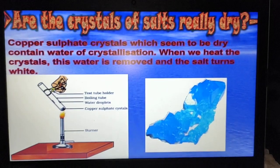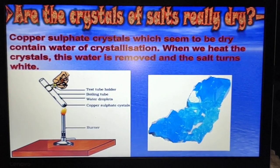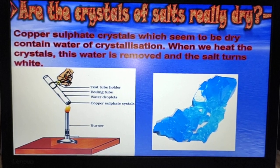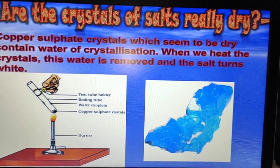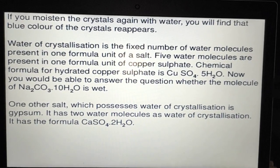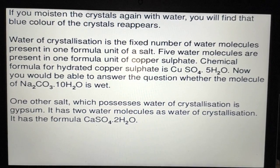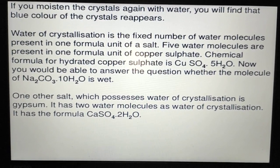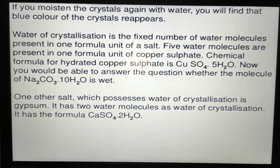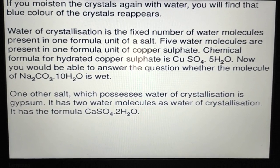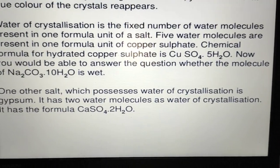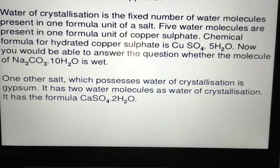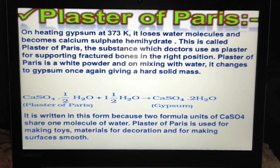The next topic is plaster of paris (POP). Regarding water of crystallization — dry copper sulfate crystals actually contain water of crystallization. When heated, this water is removed and the salt turns white. If the white crystals are moistened with water again, the blue color reappears. Water of crystallization is the fixed number of water molecules present in one formula unit of salt. For example, CuSO₄·5H₂O and Na₂CO₃·10H₂O — on dry heating, the water molecules are lost. Gypsum has the formula CaSO₄·2H₂O.